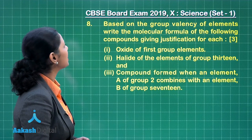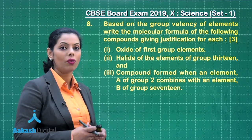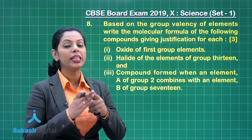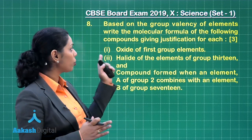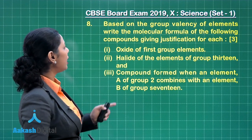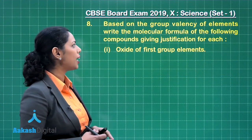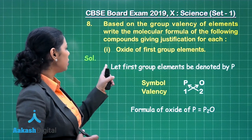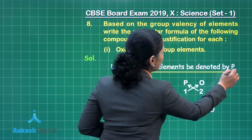Question number 8: based on the group valency of elements, write the molecular formula of the following compounds giving justification for each. You have to mention both the chemical formula and the justification. First, we deal with the oxide of first group elements — write the molecular formula for this.